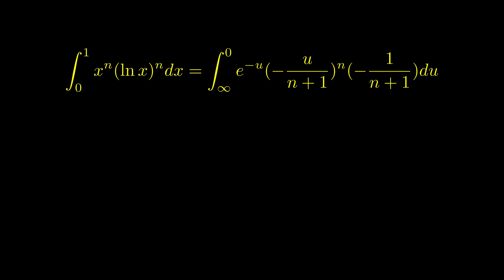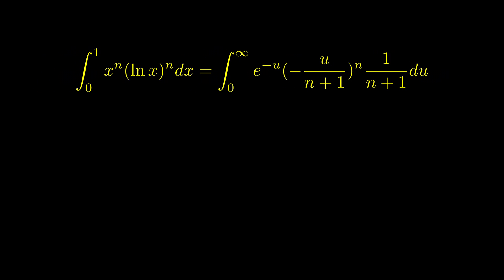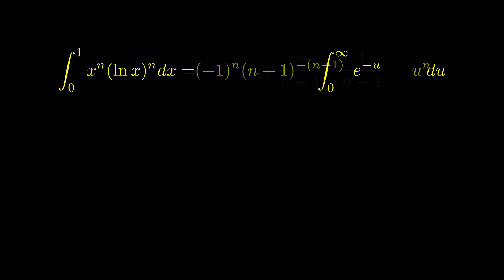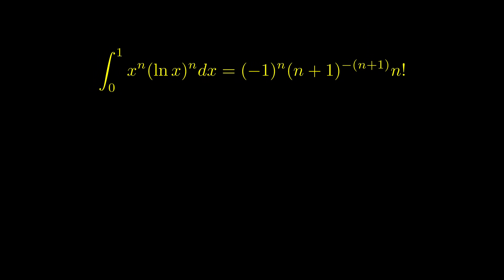This way we can remove the fraction in the exponent. Swapping the lower bound and upper bound of the integration and cleaning the terms, we see an old friend, don't we? The last expression is exactly gamma n plus 1, so it is n factorial as n is an integer.